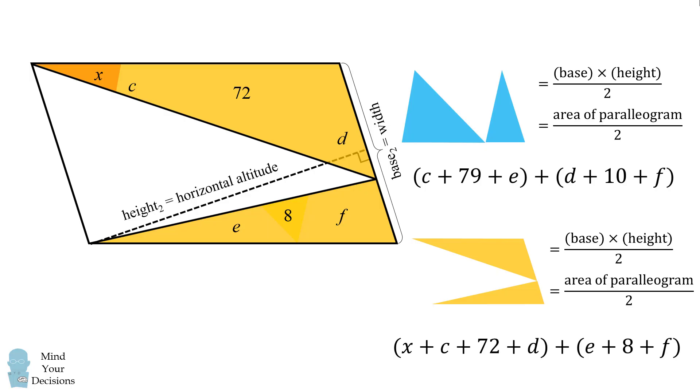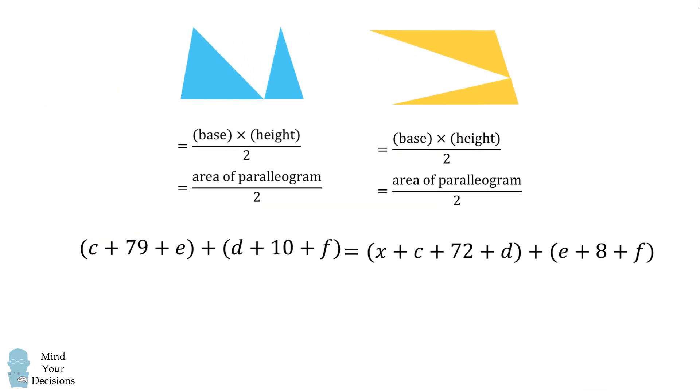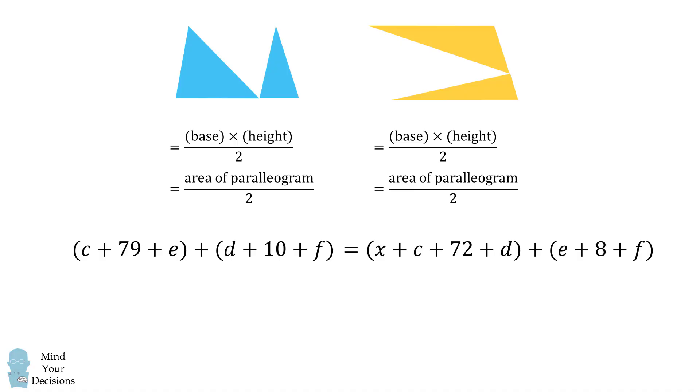So now we have two sets of shapes whose area is equal to half the area of the parallelogram. So we set these areas equal to each other, and we get the following equation. Now we'll cancel out all of the terms that we can. We'll end up canceling everything except for x and the numbers that we want. So we end up simplifying this to be 79 plus 10 is equal to x plus 72 plus 8. And we get exactly the same equation as before, and we again solve that the area of the red triangle x is equal to 9. So it's quite remarkable to me that fifth graders in China were able to solve this in less than a minute. Did you figure it out?